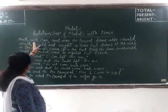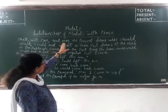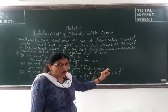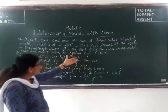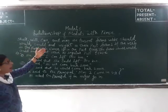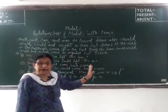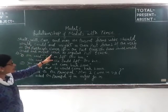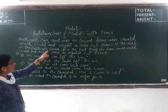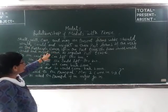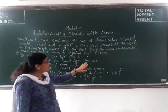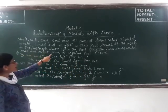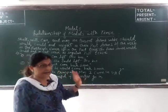Shall, will, can, and may are present forms. These are the present forms, while should, would, could, and might are their past forms. If the verb in the participle clause is in the past tense, the forms should, would, could, and might serve as regular past tense.